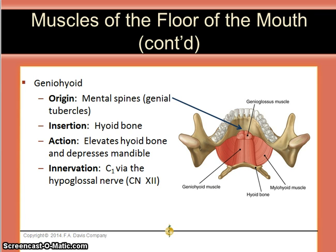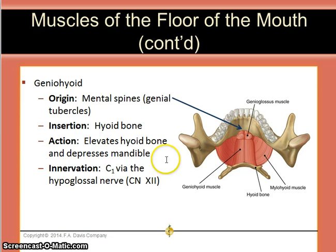The geniohyoid originates in the genial tubercles of the mandible, on the interior aspect of the mandible. They are also known as the mental spine. So the origin is genio, and it inserts on the hyoid bone. You can see the geniohyoid muscle originating in the genial tubercles and inserting in the hyoid bone.